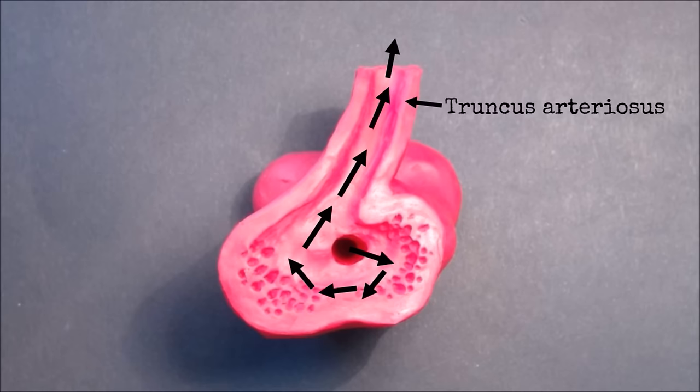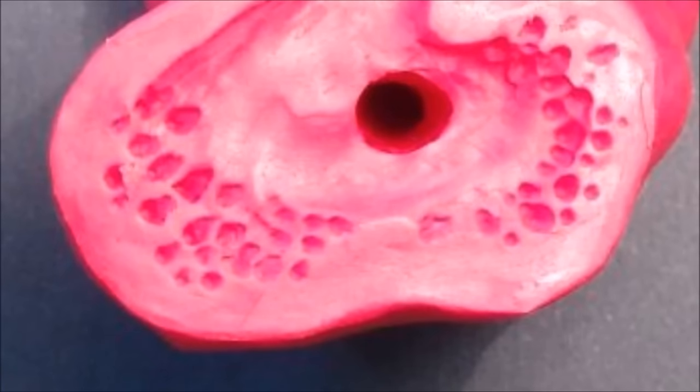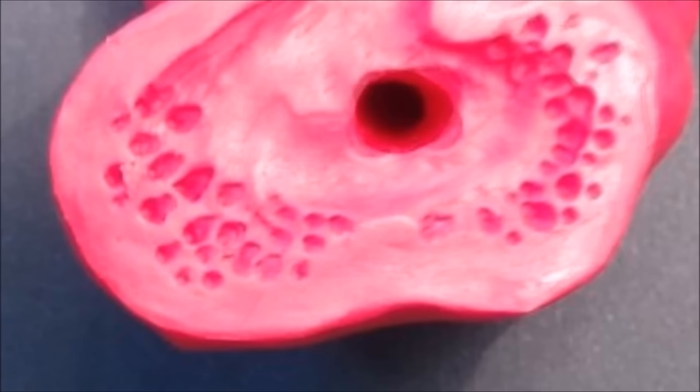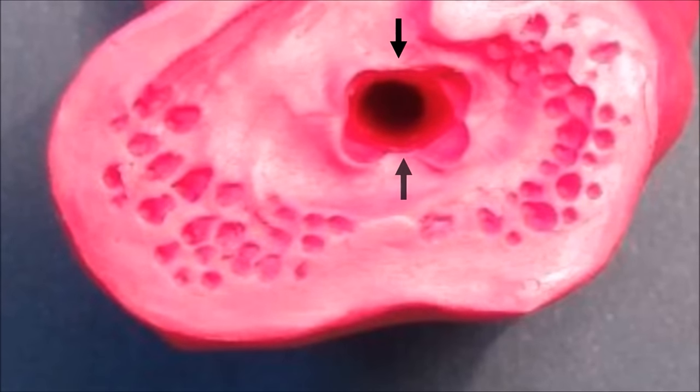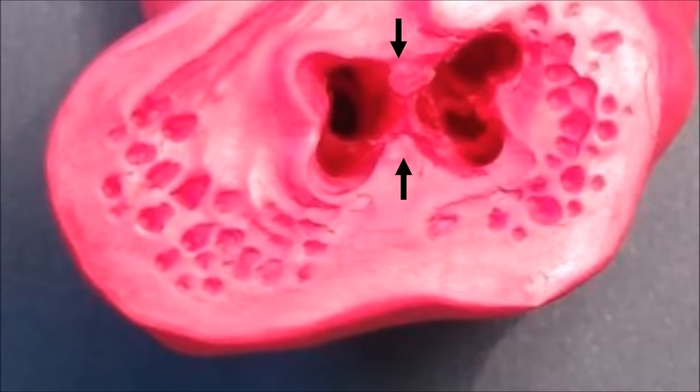The heart has two primitive chambers connected by a common atrioventricular canal. During week 4 of development, endocardial cushions develop superiorly and inferiorly, which divide the canal into separate right and left atrioventricular orifices.